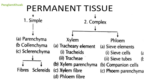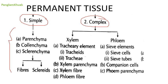Permanent tissue can be broadly divided into two types: simple permanent tissue and complex permanent tissue. In this video we will talk in detail about simple permanent tissue — parenchyma, colenchyma, and sclerenchyma — where sclerenchyma is further divided into fibers and sclerids. The next video will cover complex permanent tissue.